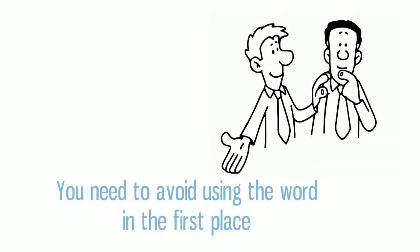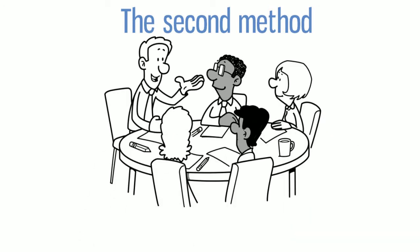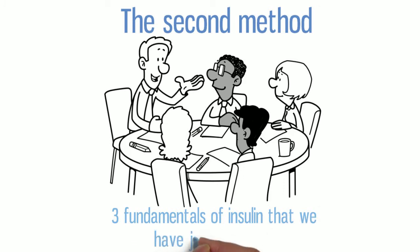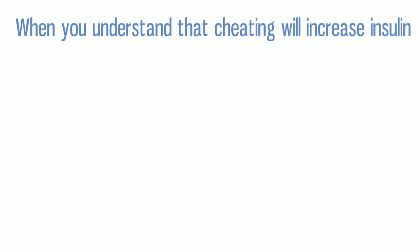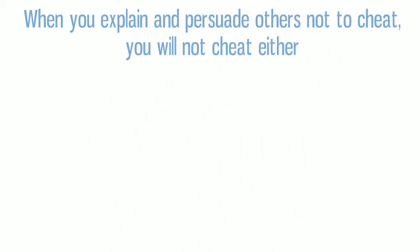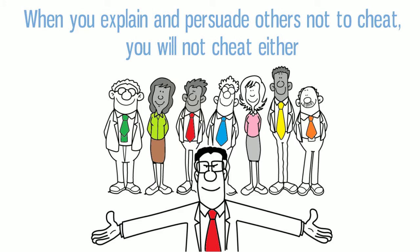The second method is to explain and help at least three other people in your family or friends to understand the three fundamental points of Thinsulin that we just discussed. When you understand that cheating increases insulin, you may not have practiced it yet, but when you explain and persuade others not to cheat, you will not cheat either because you are held more accountable to your actions.